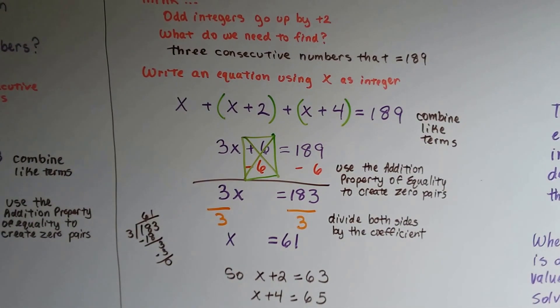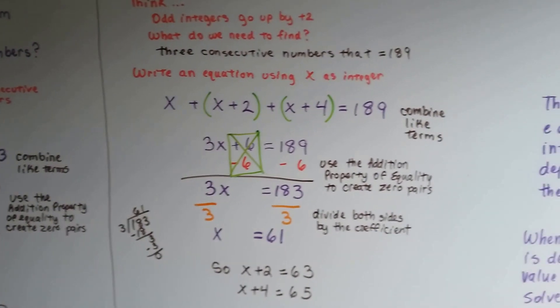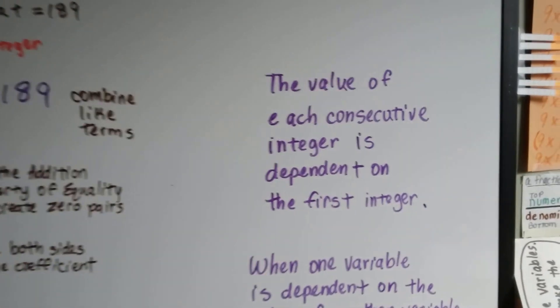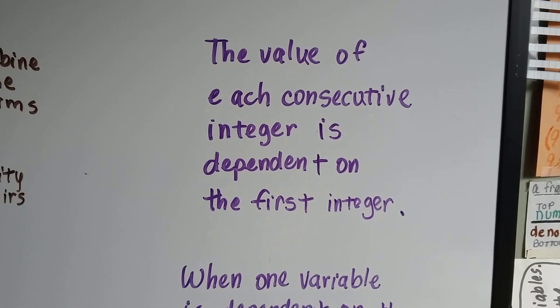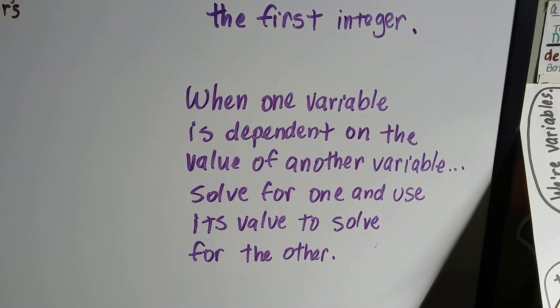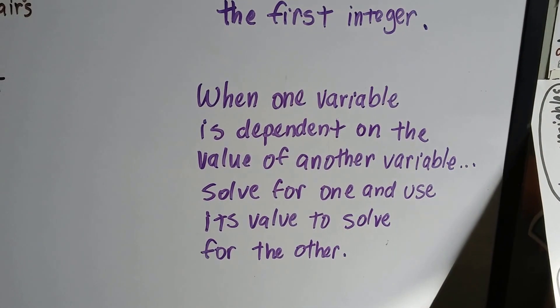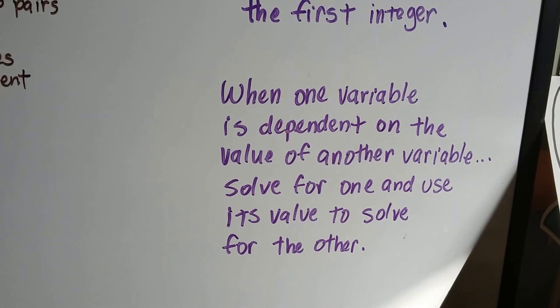If you watched the previous video and the one before that, this will make a lot more sense if you just jumped in on this at the last minute. So the value of each consecutive integer is dependent on the first integer. And when one variable is dependent on the value of another variable, we just solve for the one and use its value and plug it in to solve for the other.